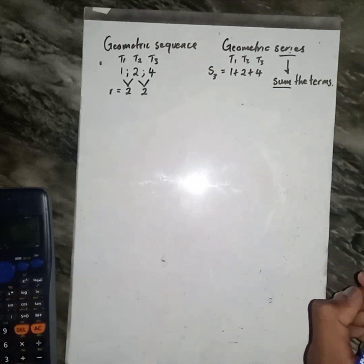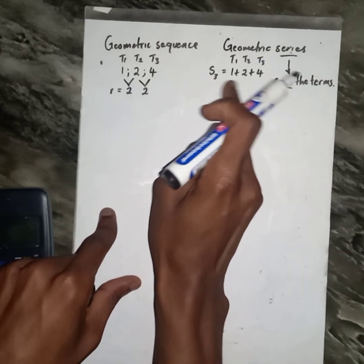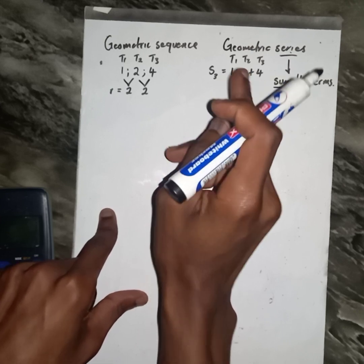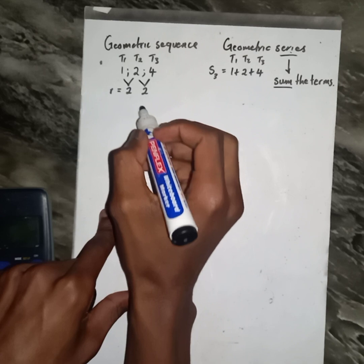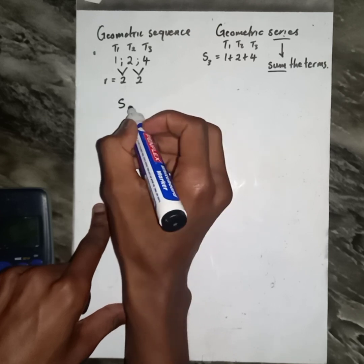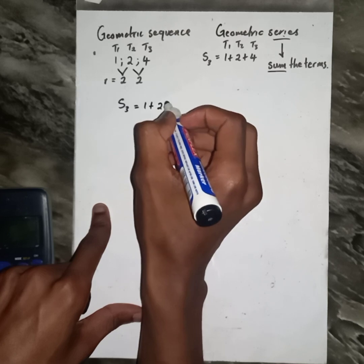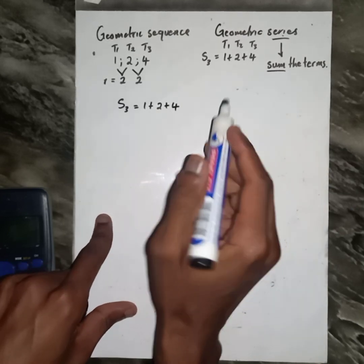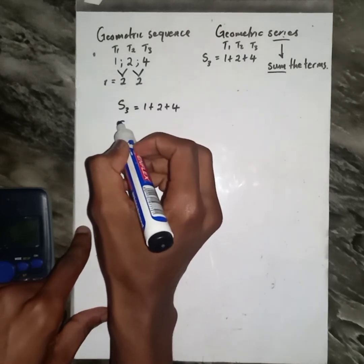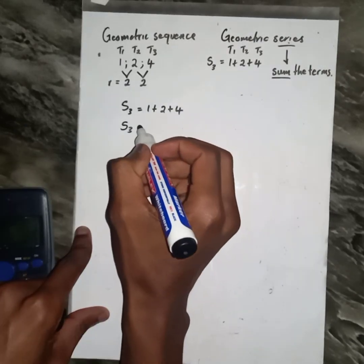I want us to sum these three terms — not just by adding them, but using a different approach. We have S: 1 plus 2 plus 4, and we found our ratio to be 2.